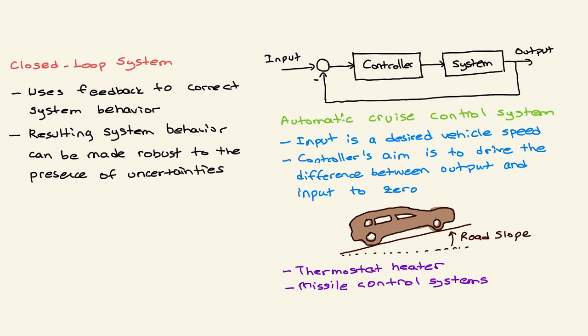You can think of this as one example: automatic cruise control system. You have your vehicle as your system, you have your controller. You are measuring the output of your system, which is the vehicle's speed, and your input is the desired vehicle speed. Here the controller's aim is to drive the difference between your actual speed of the vehicle - let's say 58 miles per hour - and let's say you set your input to 60 miles per hour, so you will have an error here: two miles per hour.